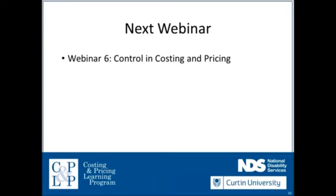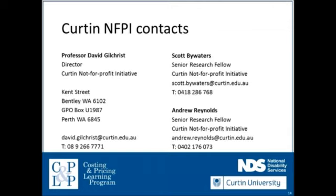That concludes our webinar looking at pricing. The next webinar will look at controls in costing and pricing — some of the risks, nuances, and difficulties to take into consideration in controlling costing and pricing processes from a governance perspective. If you have any queries or comments, the Curtin Not For Profit Initiative contacts are provided on this slide. I hope you enjoyed the webinar and look forward to catching up with you at the next one.